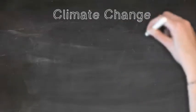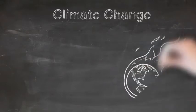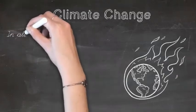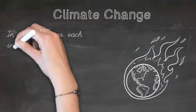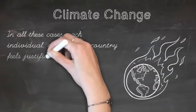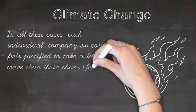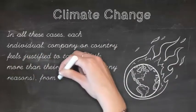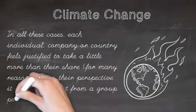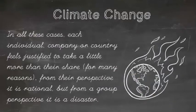The final example is climate change. Each country has an incentive to pollute a little bit more to get ahead — they have their own economic reasons and so forth. But in all of these cases, each individual company or country feels justified to take a little bit more than their share for many reasons. From their individual perspective, it is rational, but from a group perspective, it's a disaster.